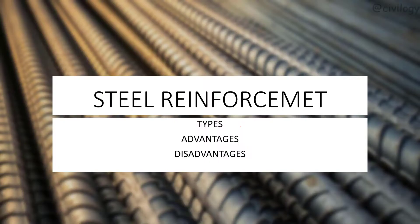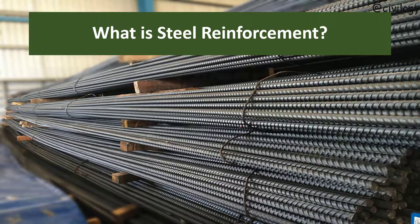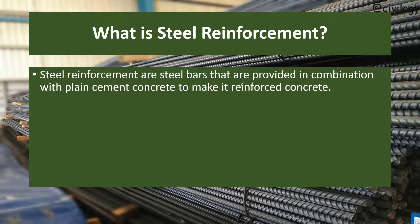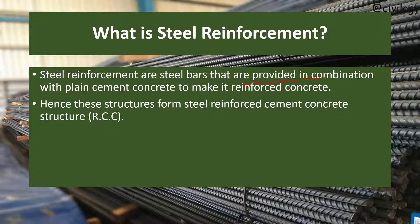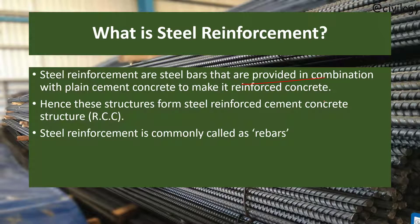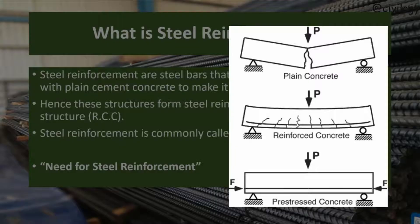So what is steel reinforcement? Steel reinforcement, or steel bars, are provided in combination with plain cement concrete to make it reinforced concrete. These steel-reinforced cement concrete structures are called RCC. Steel reinforcement is commonly called rebar. Plain cement concrete is weak in tension and strong in compression, so the tensile property for concrete structures is obtained by incorporating steel reinforcement.